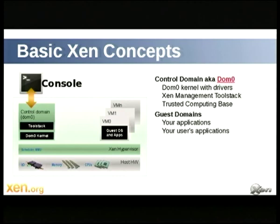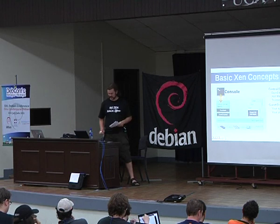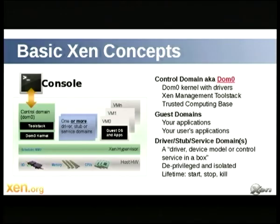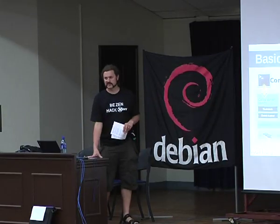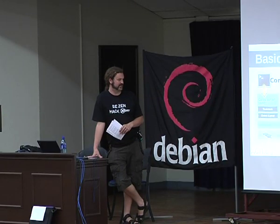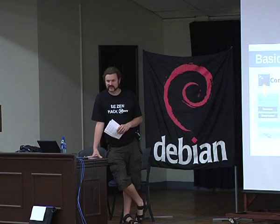DOM0 contains your NIC drivers, storage drivers, tool stacks, host console access, and things like that. As well as the control domains, you have your actual guests, where your customers or users can run their workloads. One of the interesting things about Xen's architecture is that you can split up this privileged domain and take services out of it into driver domains and stub domains, which lets you deprivilege those down to a minimum privilege level, giving you good properties for robustness, isolation, and security.